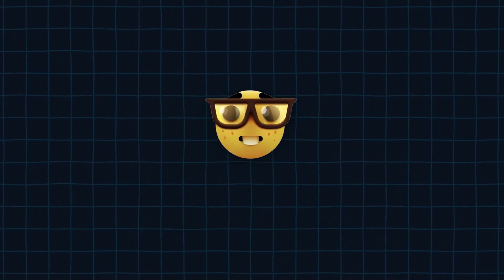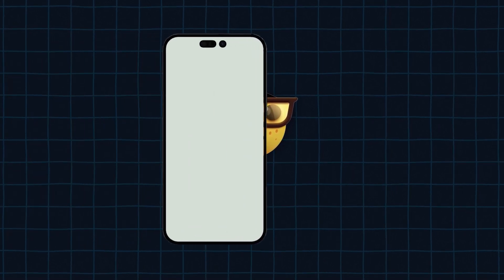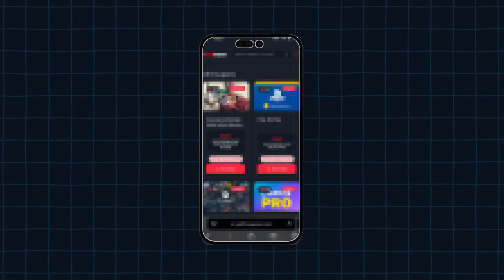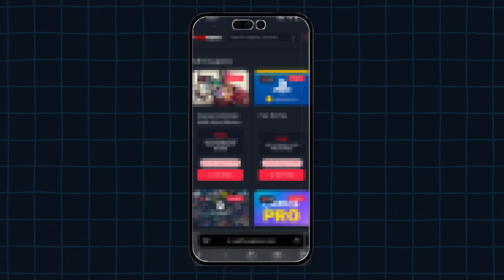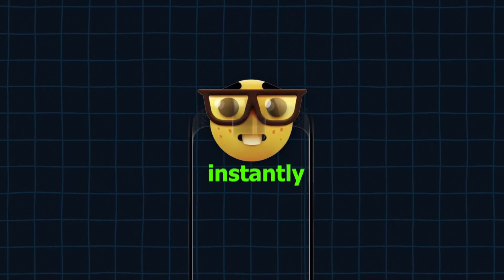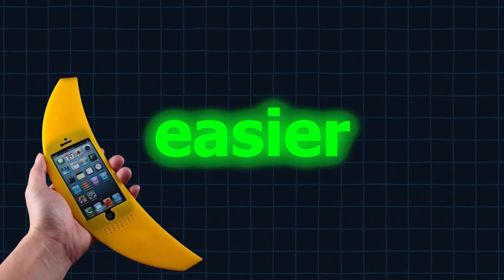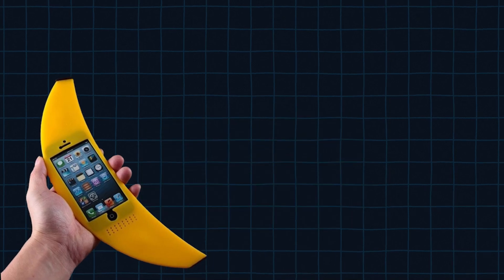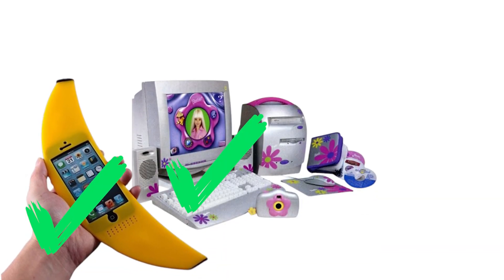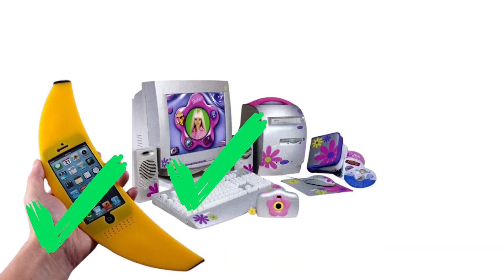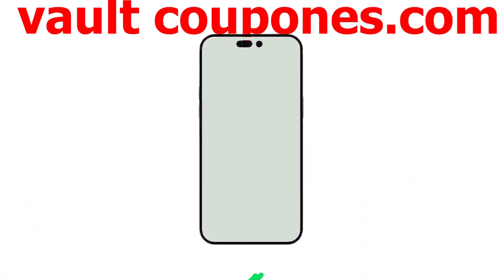Let me show you all how to get this code now. All you guys have to do is go on your mobile device, because I'm going to show you a website that gives out free codes that you can get instantly. I recommend doing it on mobile because it's easier to get the code on mobile than on PC, but you can do either or. So go to this site called vaultcoupons.com.